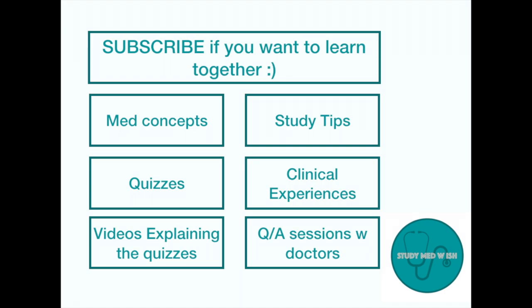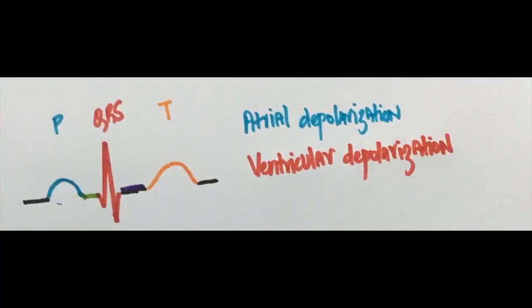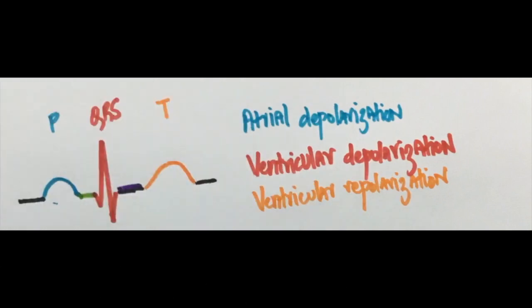This is what a normal ECG looks like. The one in blue is the P wave, this is the QRS and this is the T wave. The P wave indicates atrial depolarization. This means during this phase, the atria of the heart contract. QRS complex represents ventricular depolarization that is ventricular contraction. The T wave represents ventricular repolarization which means at this time the ventricles are relaxed.